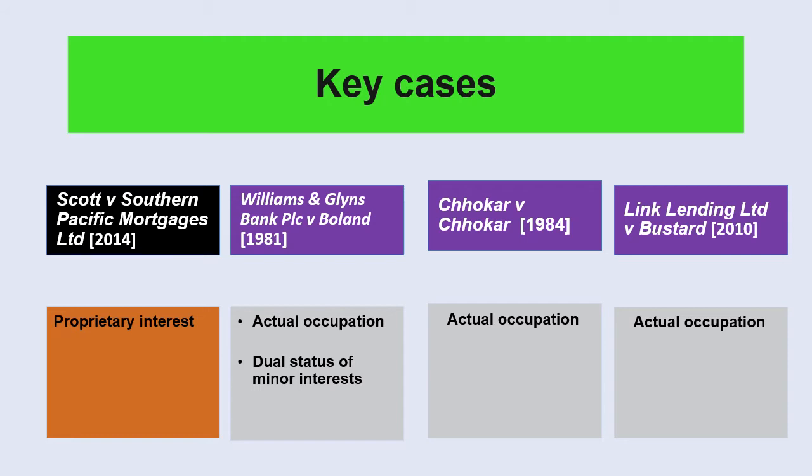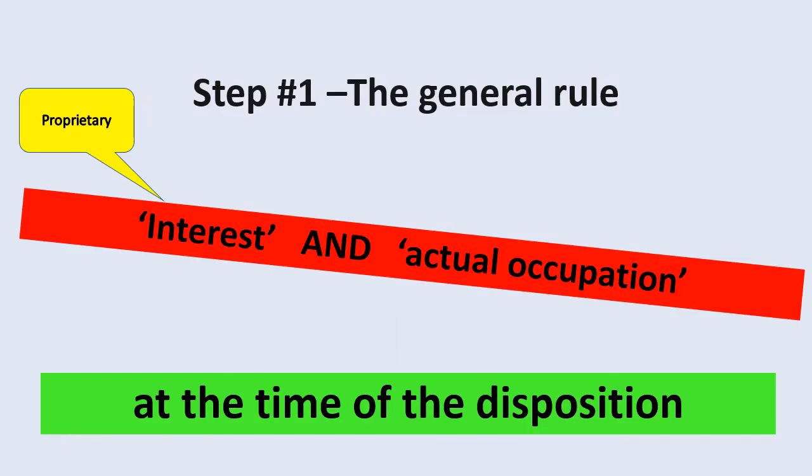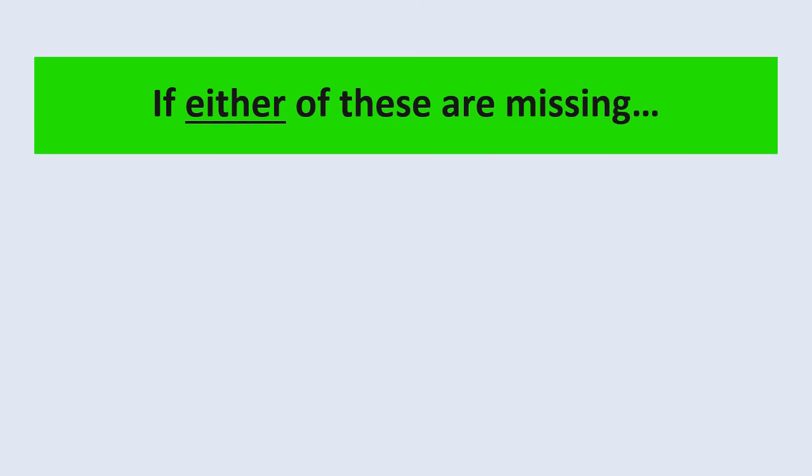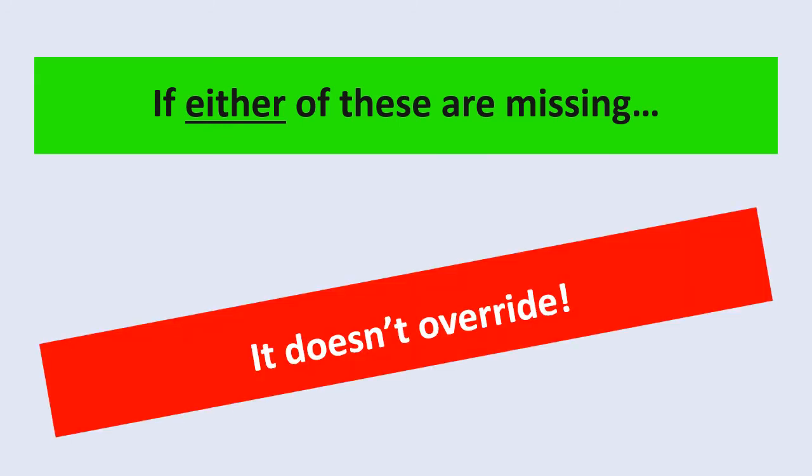Here's a summary of what we've seen so far. There are two requirements. The third party must have a proprietary interest which in reality will be an equitable interest, and the third party must be in occupation and they both must be present at the time of the disposition which is usually a sale. And it's important to appreciate that if either of these are missing at the time of the disposition then there's no interest which overrides under Schedule 3 paragraph 2.